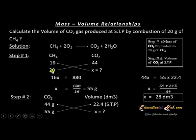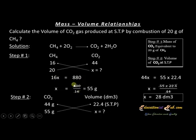After cross-multiplying: 20 × 44 = 16 × X, which gives 16X = 880. Dividing both sides by 16: X = 55 grams. So 55 grams is the mass of carbon dioxide produced by combusting 20 grams of methane.